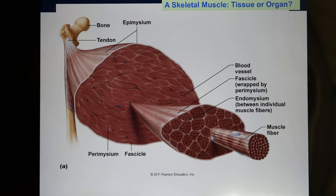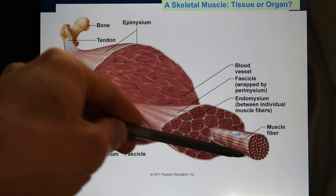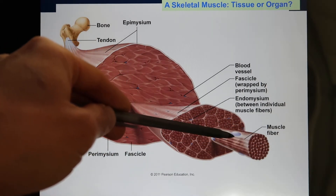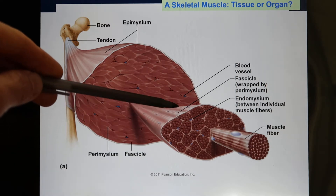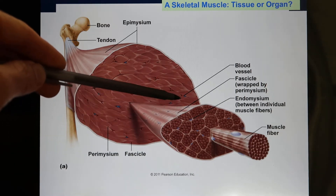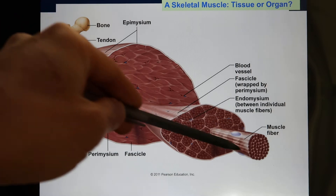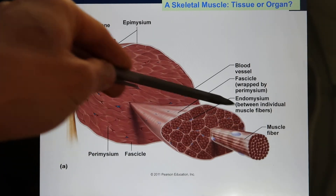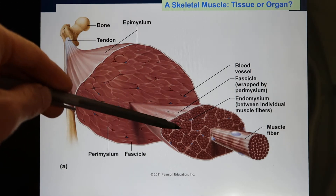Muscles are pretty well organized. These are the muscle fibers at the cellular level. You put a lot of muscle fibers together and surround them with the perimysium. Each muscle fiber is covered by the endomysium. When you have those muscle fibers together, that's called the fascicle — the fascicle is a unit.